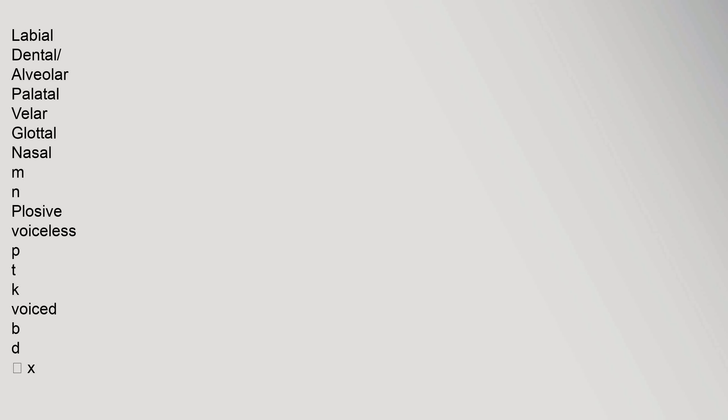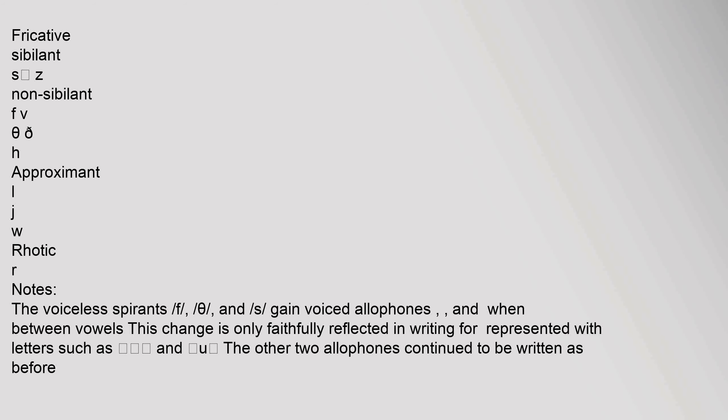The voiceless spirants f, theta, and s gain voiced allophones when between vowels. This change is only faithfully reflected in writing for certain letters; the other two allophones continued to be written as before.